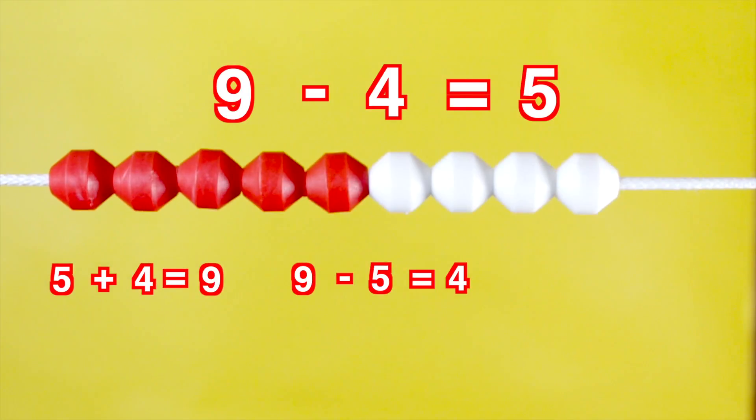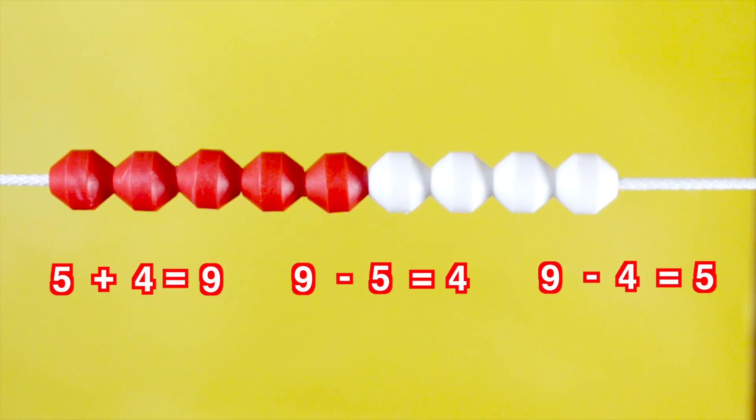Thus, subtraction is the reverse of addition. For the addition fact, 5 plus 4 equals 9, we have 2 subtraction facts: 9 minus 5 equals 4 and 9 minus 4 equals 5.